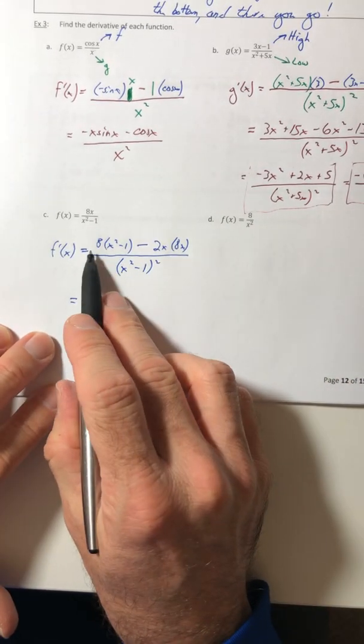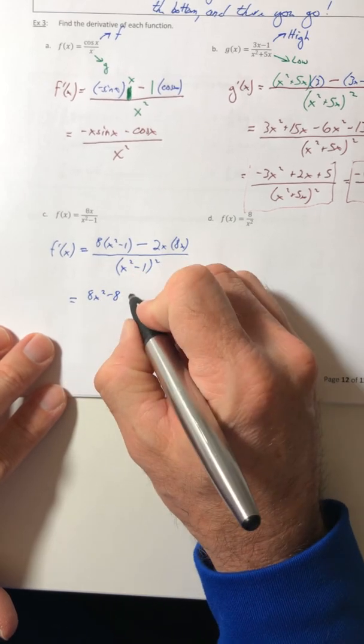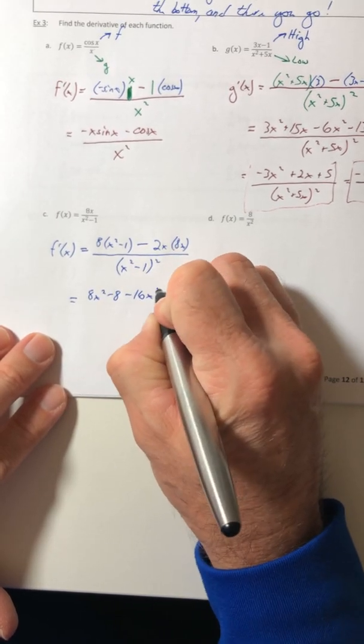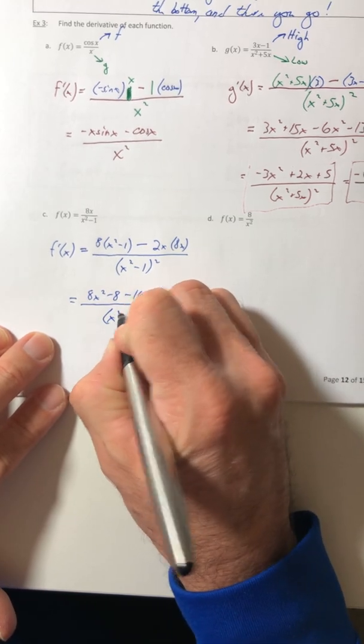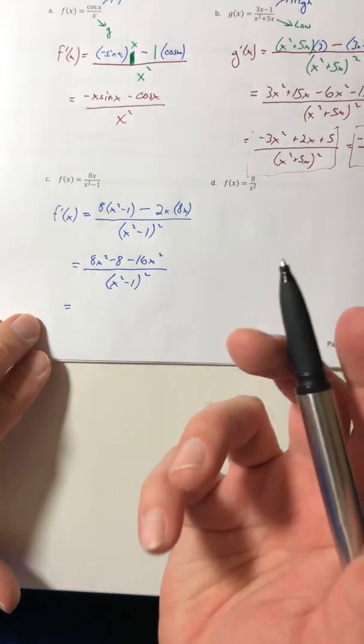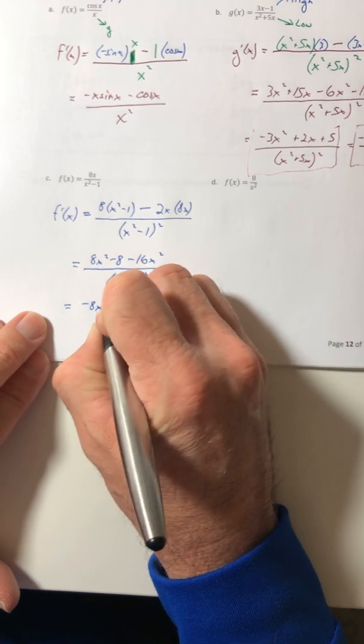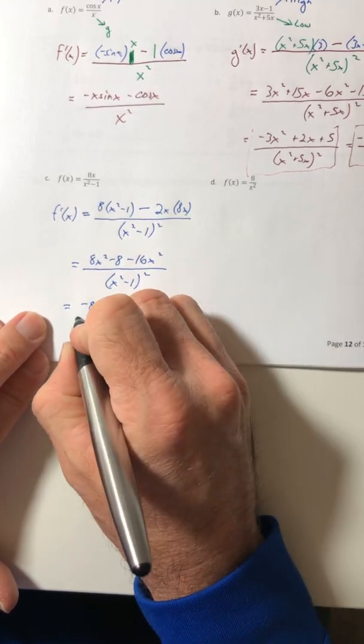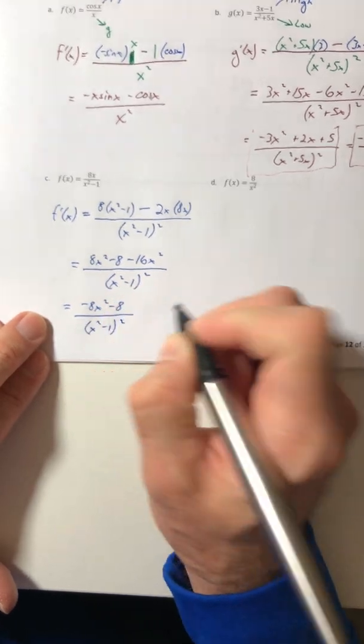Okay, so let's go ahead and multiply that out. 8x squared minus 8 minus 16x squared. And we're going to leave the denominator the way it is for now. We'll see if we need to do anything with it later. So just combine like terms.